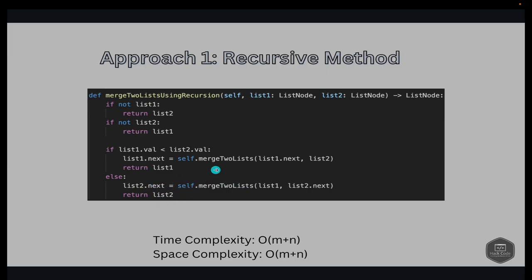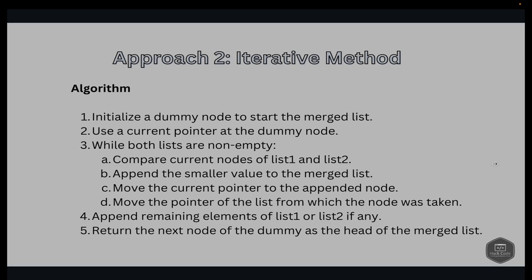Complexity analysis for the recursive approach: time complexity is O(n + m), where m and n are the lengths of list1 and list2. Space complexity is O(m + n), due to the recursive call stack.